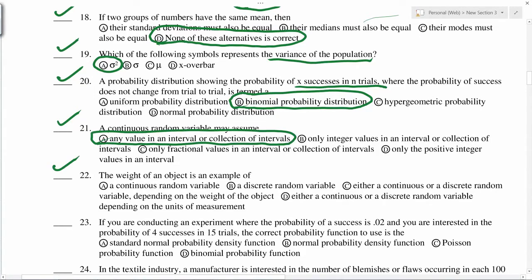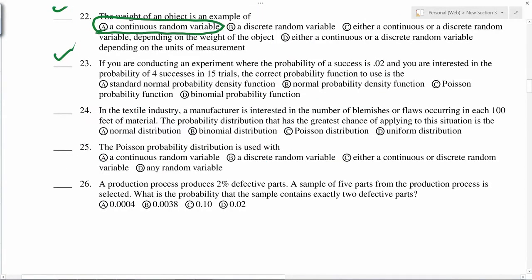If you are conducting an experiment where probability of success is 0.02 and you are interested in probability of 4 successes in 15 trials, the correct probability is binomial.